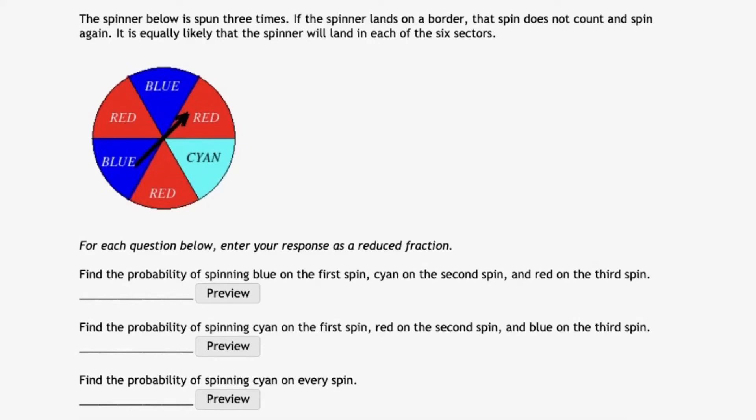Let's take a look at the following problem. The spinner below is spun three times in a row. If the spinner lands on a border, that spin does not count and you spin again. It is equally likely that the spinner will land in each of the six sectors. For each question below, enter your response as a reduced fraction.